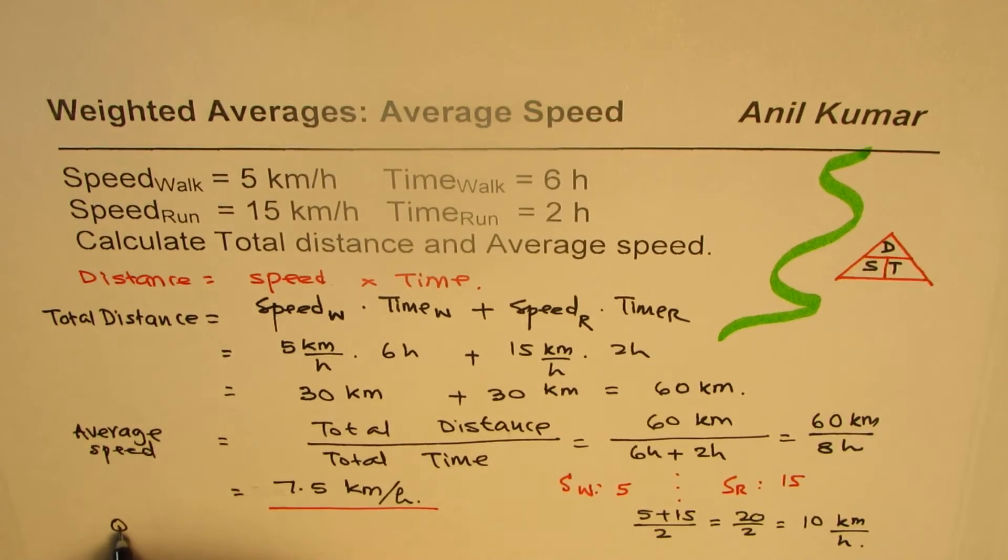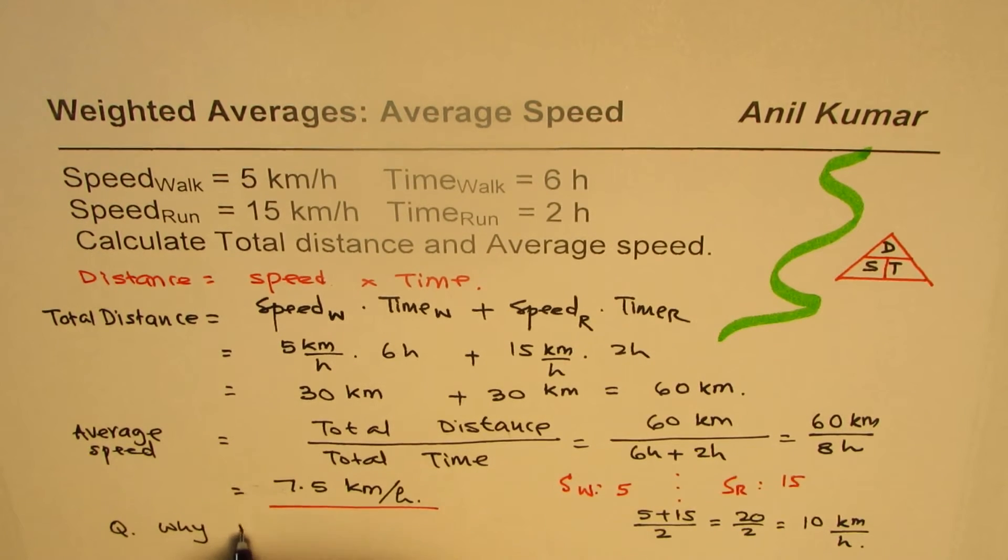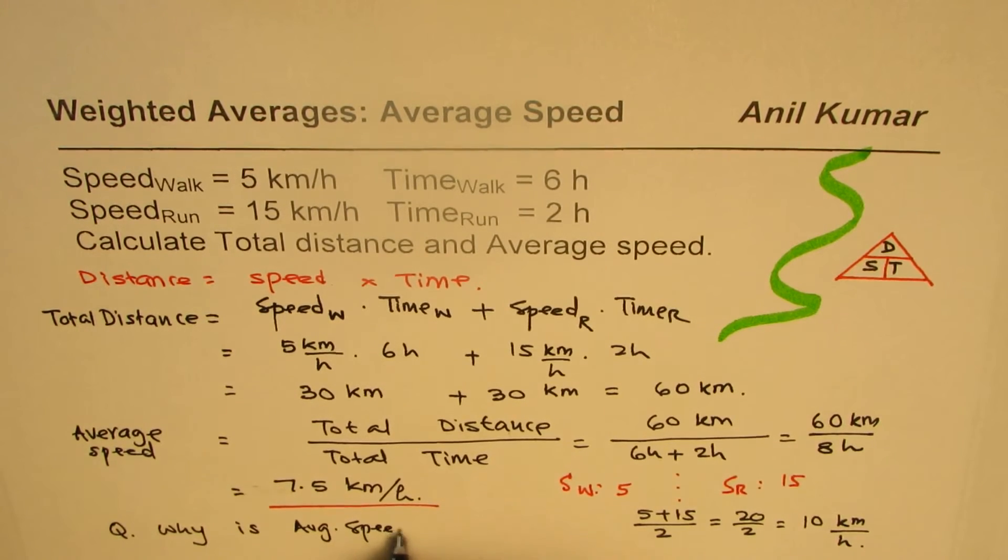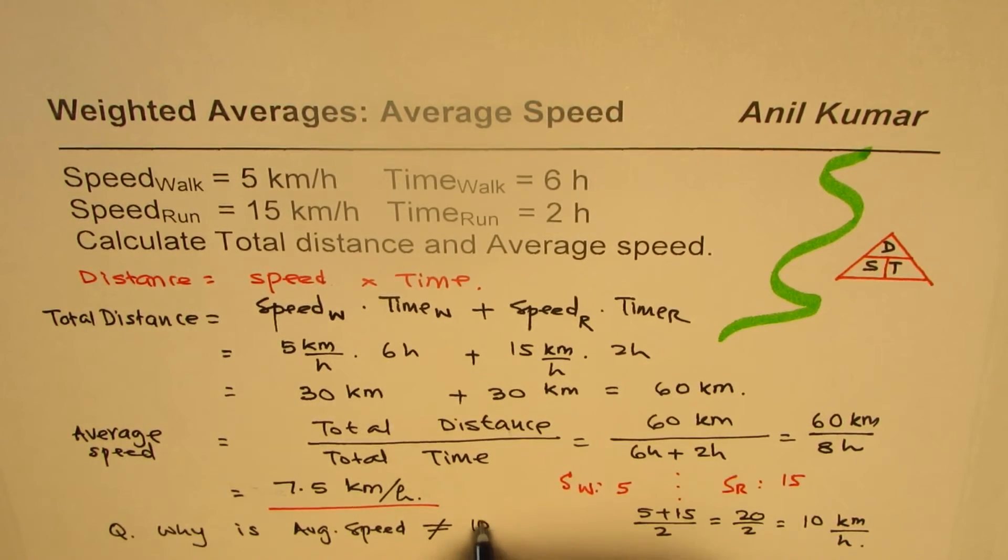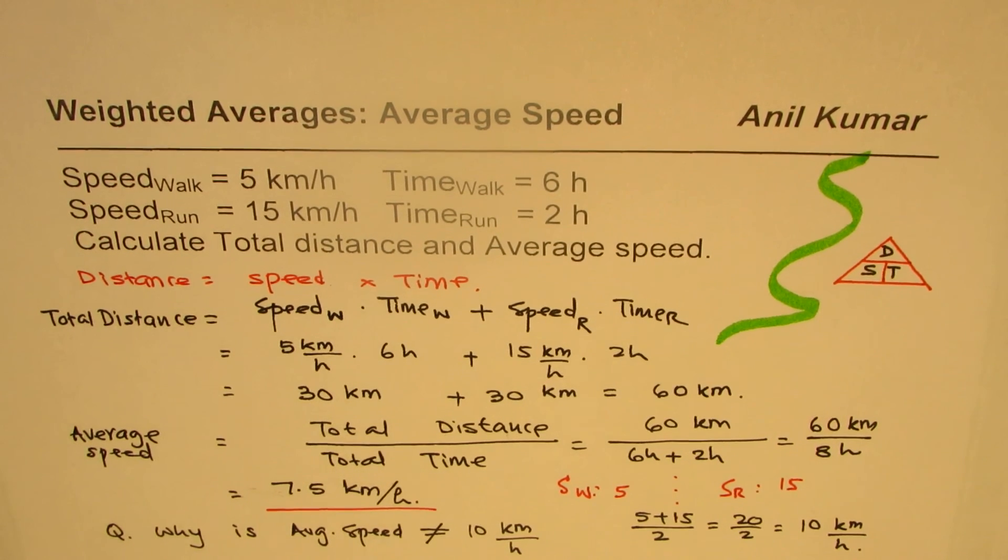Now my question to you is, why are these two speeds different? Why is average speed not equal to 10 kilometers per hour? Why is it 7.5 kilometers per hour? I hope you understand and appreciate it. Anil Kumar, you can always subscribe and share my videos. Thank you and all the best.